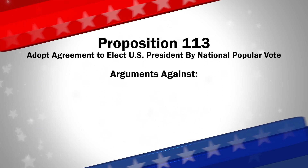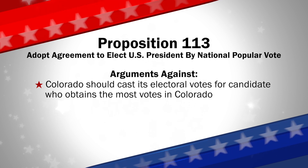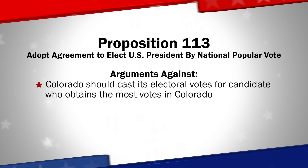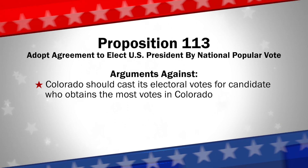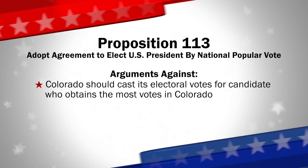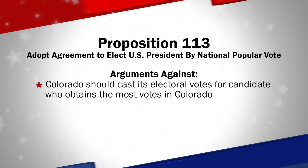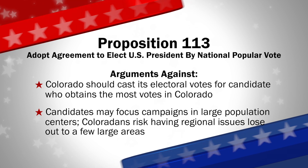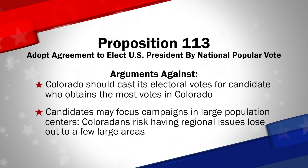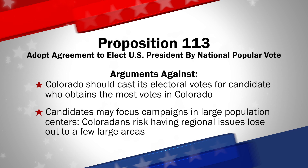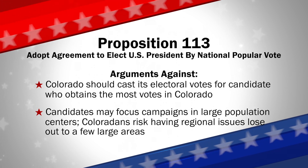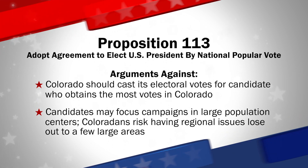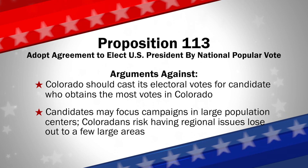Those opposed to Proposition 113 say Colorado should cast its electoral votes for the candidate who obtains the most votes in Colorado. If the agreement goes into effect, Colorado's presidential electors would be obligated to vote for whomever wins the national popular vote, even if that candidate did not win the majority of votes in the state. Further, a national popular vote may encourage candidates to focus their campaigns in large population centers, and all Coloradans risk having the unique regional issues they care about lose out to the interests of a few large cities in a few large states.